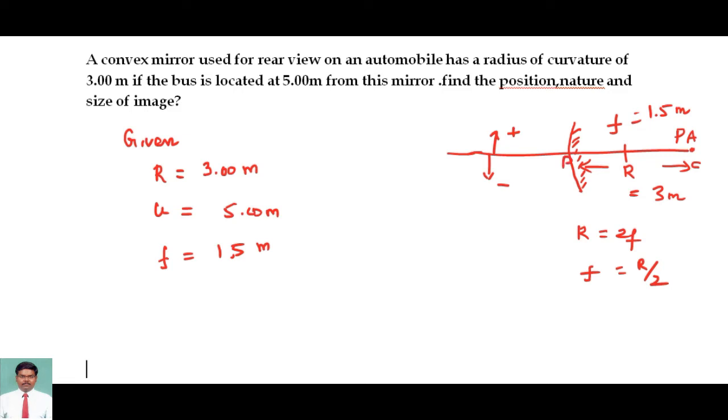This is called the pole. All distances should be measured from the pole. If you measure from the pole to the left side, it is taken as minus. If you measure from pole to the right side, then it is taken as positive.